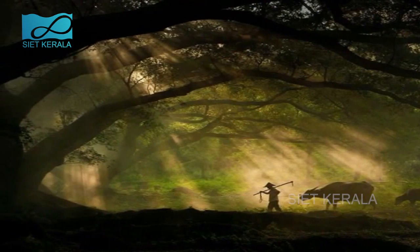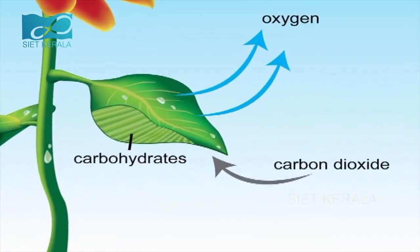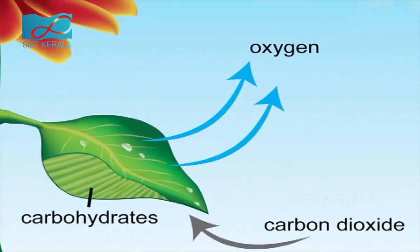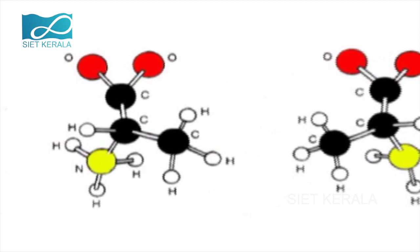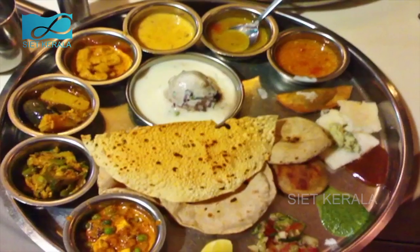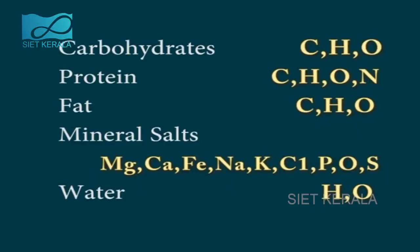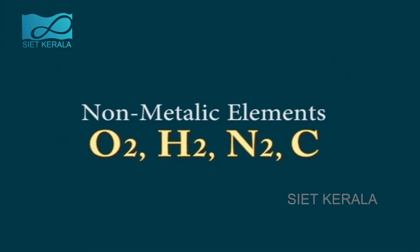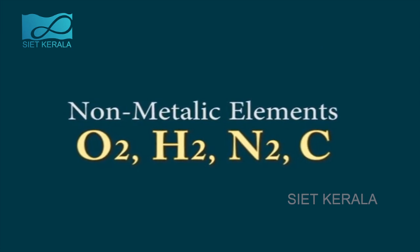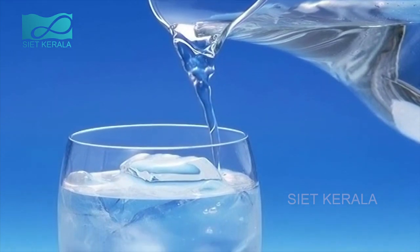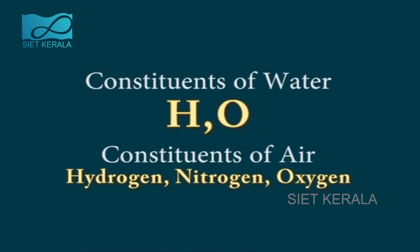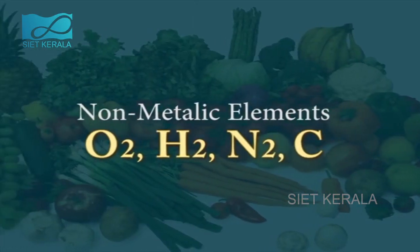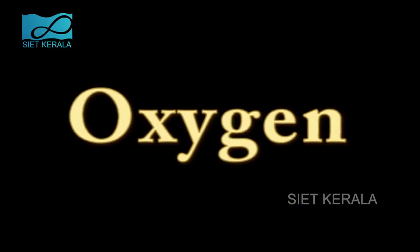Plants produce carbohydrates along with oxygen through a chemical process called photosynthesis. Elements in carbohydrates thus produced are carbon, hydrogen and oxygen. Other components of food are carbohydrates, protein, fat, mineral salts and water. There are metallic and non-metallic elements among these. Water, hydrogen, oxygen are non-metallic elements. O2, H2, N2, water and air have a major role in sustaining life.